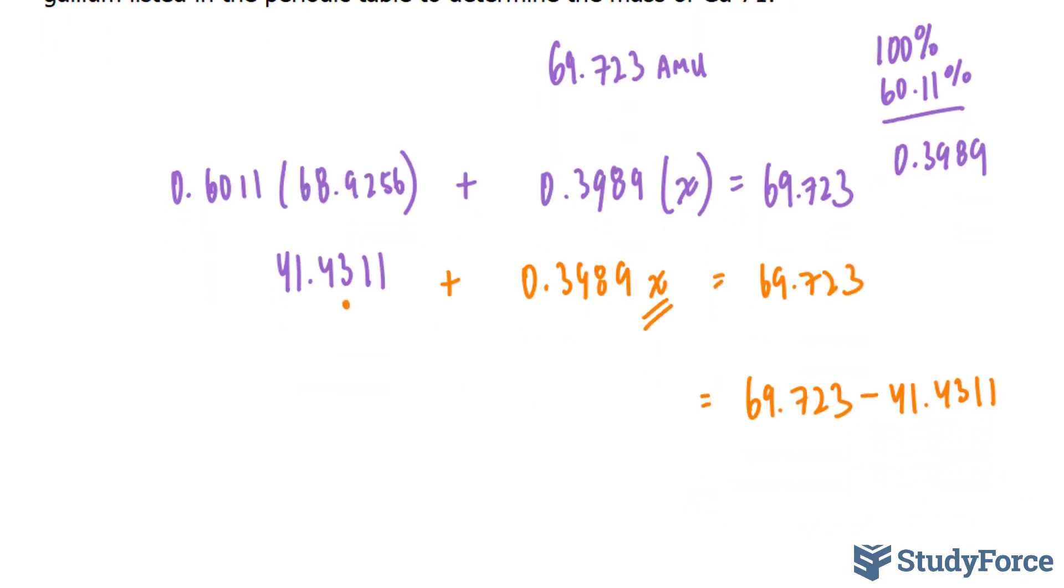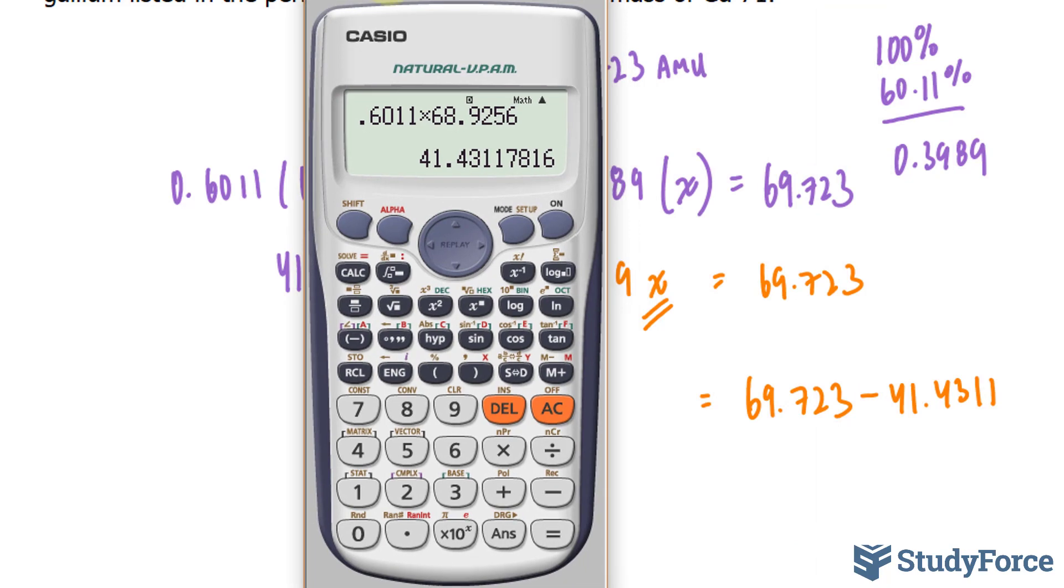That gives me 69.723 minus 41.4311. Now, when it comes to adding and subtracting, your final answer needs to contain the same amount of numbers after its decimal place as the number with the fewest decimal places before calculating. So this has three numbers after the decimal place, this has four, so your final answer should also have three numbers after the decimal place. Use the least amount.